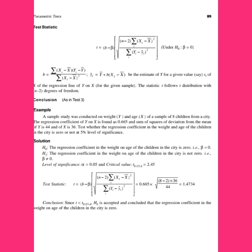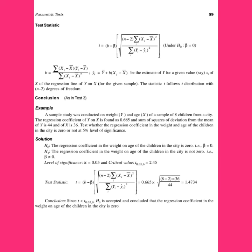Consider this example: a sample study was conducted on weights and ages of a sample of eight children from a city. The regression coefficient of y on x — the sample regression coefficient beta — was found to be 0.665. The sum of squared deviations from the mean of y is 44, and the sum of squared deviations from x is 36.